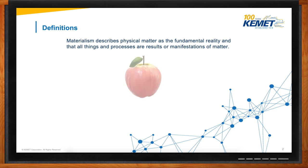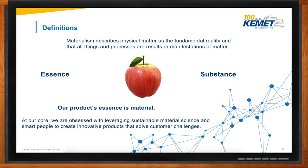Let's try to make it a bit more visual. Take the example of an apple. What is important is not that it's red or green, that it's young or ripe, or that it's big or small. What makes an apple an apple is its substance or its essence. And it's the same with our products at Kemet — our product's essence is material. At our core, we are obsessed with leveraging sustainable material progress in science, and we have great people to create the products that customers need.